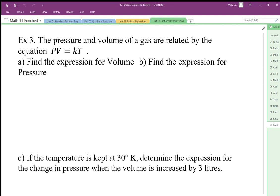The pressure and volume of a gas are related by the equation PV equals kT, where P is pressure, V is volume, k is a constant, and T is the absolute temperature.